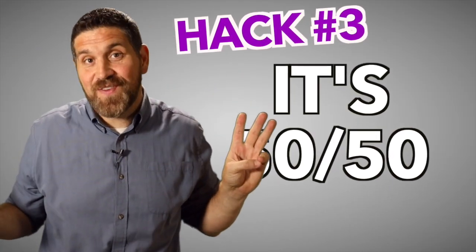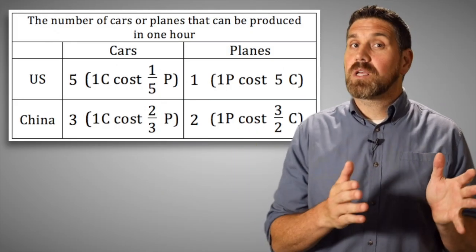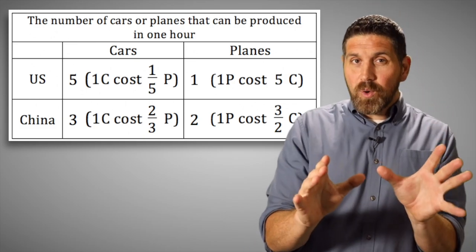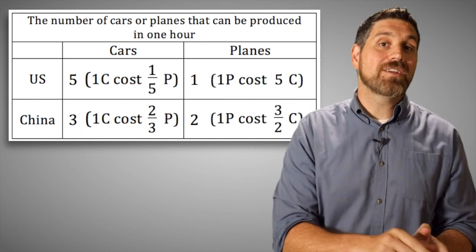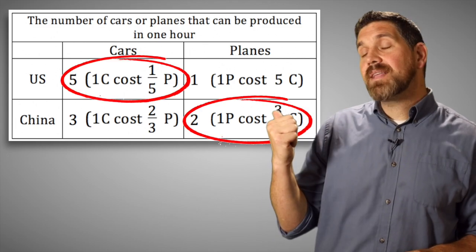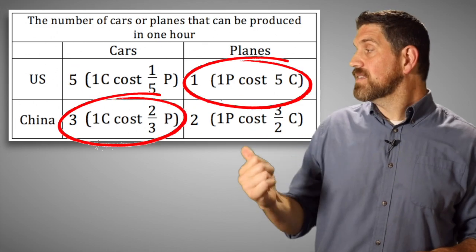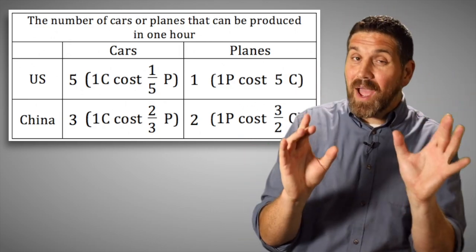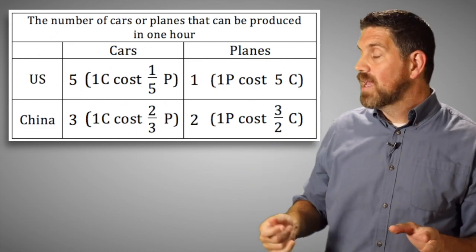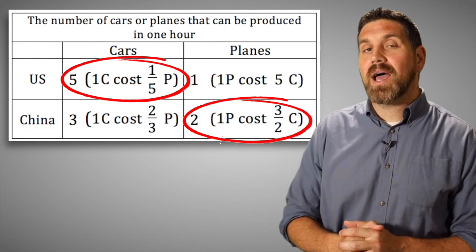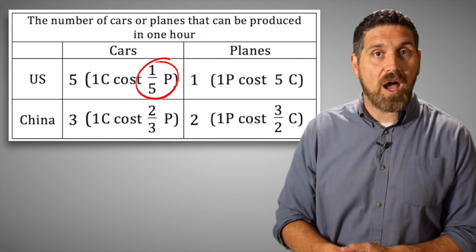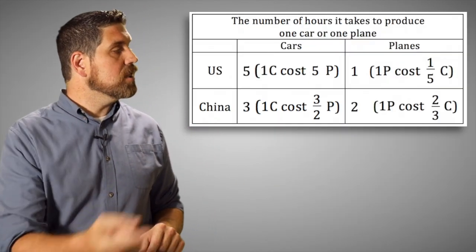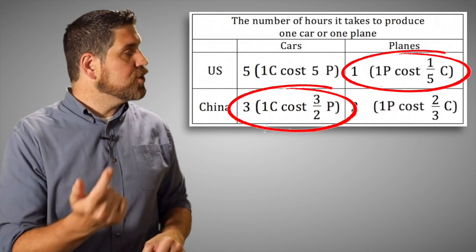Hack number three: it's basically a 50-50. Once you've done all the calculations, you have to figure out who has comparative advantage in cars and planes. Remember, it won't be the United States for both — it's either one or the other. There are only two possible answers: either the US specializes in cars and China does planes, or the US specializes in planes and China does cars. To get the right answer for the output question, choose the lower opportunity cost — the US specializes in cars and China specializes in planes. For an input question, the US specializes in planes and China specializes in cars.